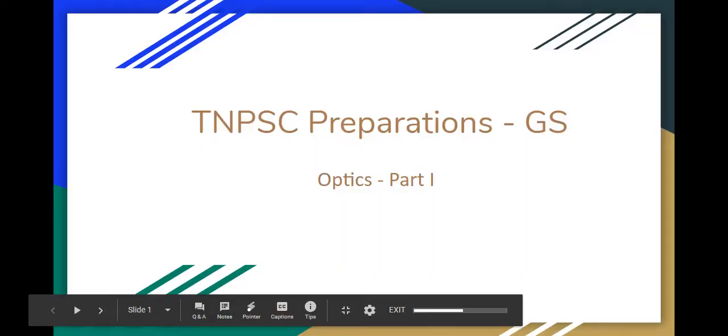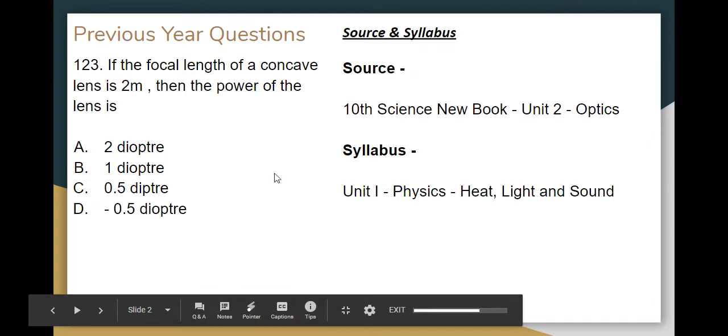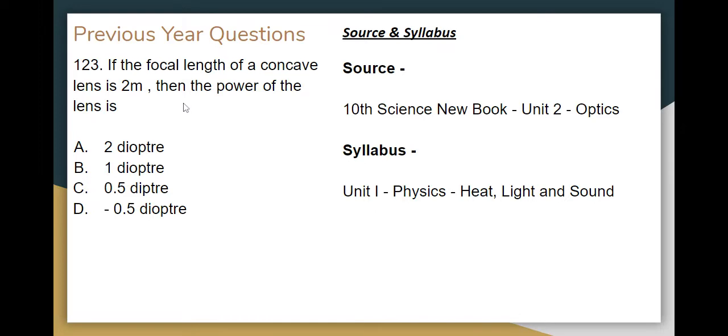Let's look at the Optics chapter. Here we have the 10th standard new book, Unit 2. We can analyze previous questions — for example, from the Group 4 2019 exam: if the focal length of a concave lens is 2 meters, then what is the power of the lens? The source is the 10th standard new book, Unit 2 Optics.